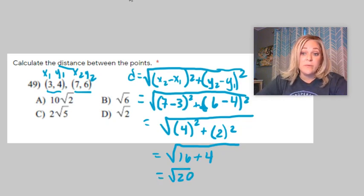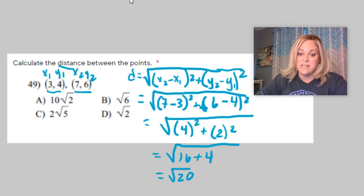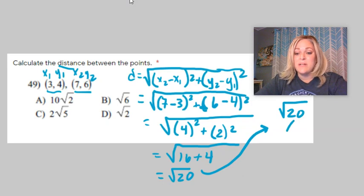And when you look at the answers, square root of 20 is not one of the choices. So I'm going to take this, and I realize, oh, it's not simplified. So you would have to break this down and do the factor tree to simplify the radical.